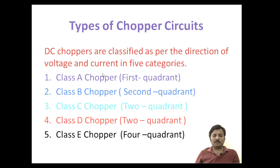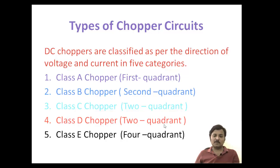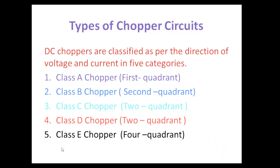Class A chopper is a first quadrant chopper, operated in the first quadrant. Class B chopper is a second quadrant chopper, operated in the second quadrant only. Class C chopper is a two-quadrant operation, first and second quadrant. Class D chopper is also two-quadrant, but operated in first and fourth quadrant. Class E chopper is a four-quadrant operation — all four quadrants are possible.